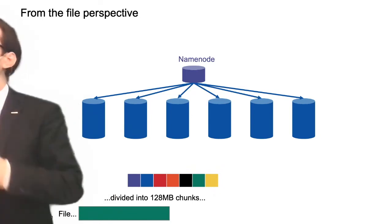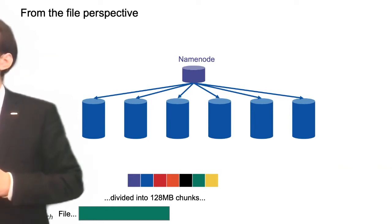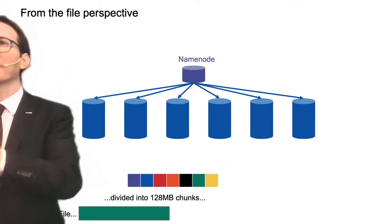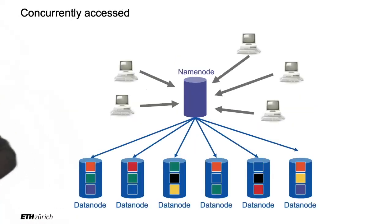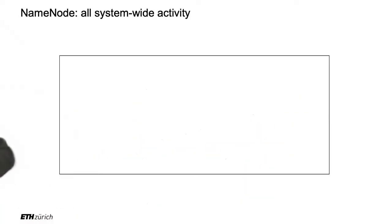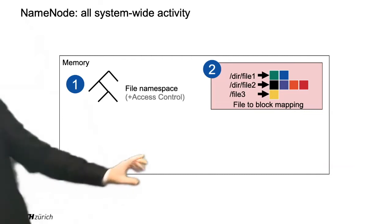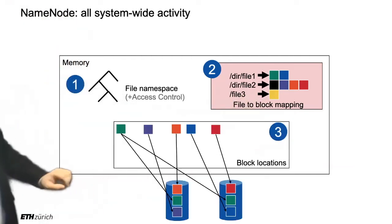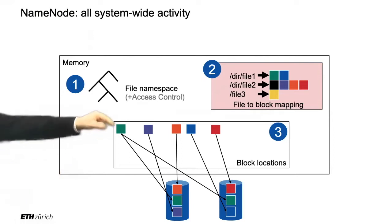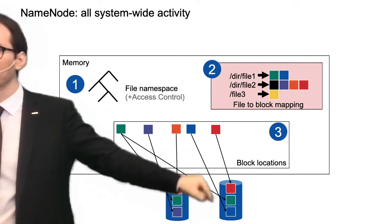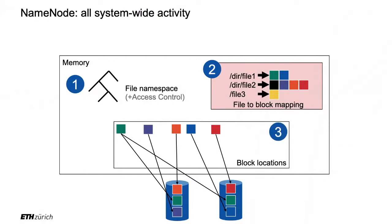The name node also stores the hierarchy of directories and files — the file namespace. So the three things stored in the name node's memory are: the file namespace, the file-to-block mapping where every file is associated with a list of blocks, and the block locations which map block IDs to the data nodes. Together, these are sufficient to serve data to anyone accessing HDFS.